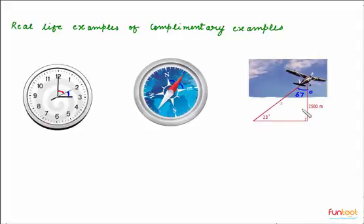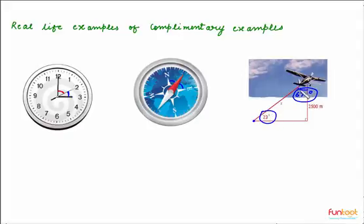Here we have an aeroplane. We form a triangle for the aeroplane. The height of the aeroplane is 2500 meters, and if from this point we are observing the aeroplane, then this angle is 23 degrees and this is 67 degrees. If we add 23 degrees and 67 degrees, this will add up to 90 degrees. So these two angles are a pair of complementary angles.